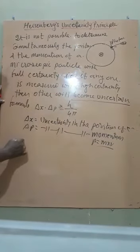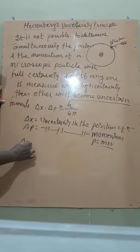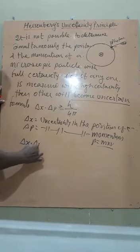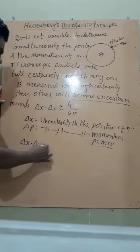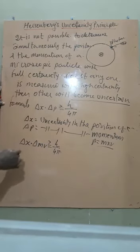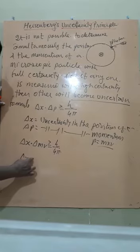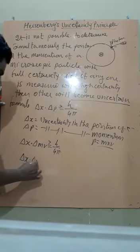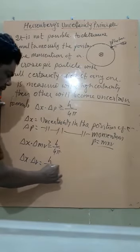What is momentum? It is momentum P is product of mass into velocity, mass into velocity. So if we place the meaning it will become del X into del mV is equal to or greater than h upon 4π.